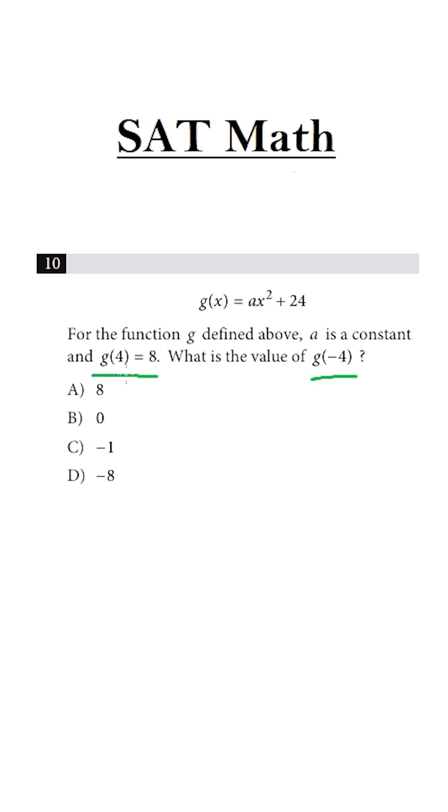Now we need to understand whatever is in this bracket here. We have to put this in the x. g of x equals ax squared plus 24, and g of 4 equals a times 4 squared plus 24. Whatever is in the bracket, we have to put that in place of x. So g of minus 4 equals a times minus 4 squared plus 24.